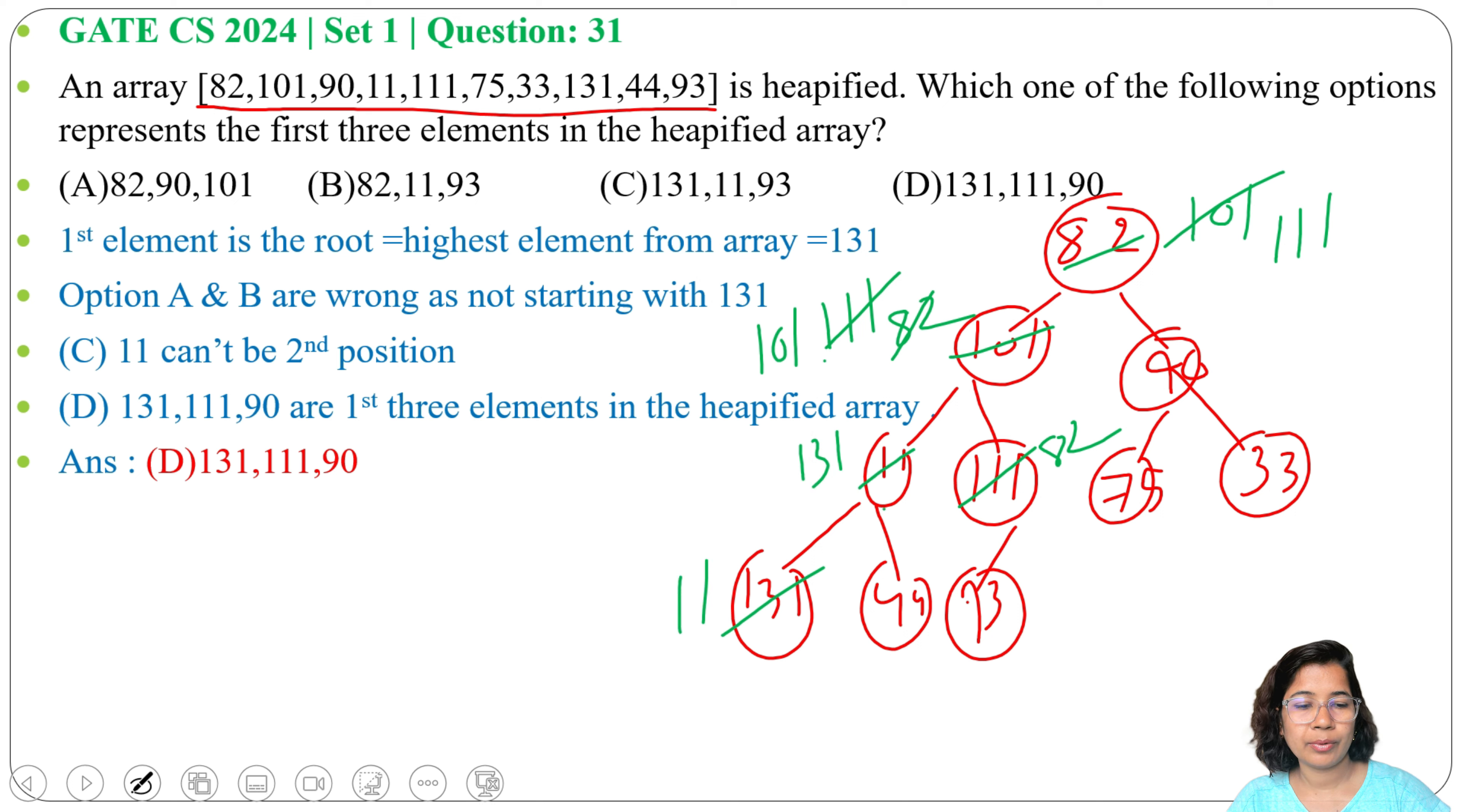Next, 11 with 131 and 44 - obviously 131 is higher. 131 will come here, 11 will come here, we are switching. Next, 131 with 101, so 131 goes up. Next, 131 with 111, so 131 stays at top. Finally, 93 and 82 swap, so 93 will come here.